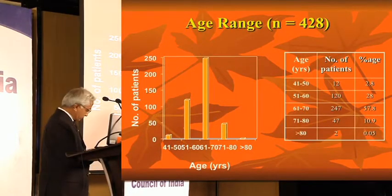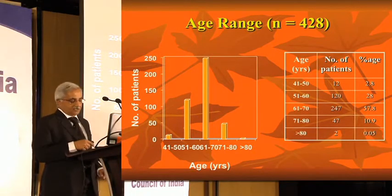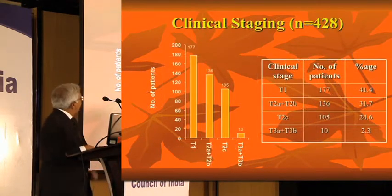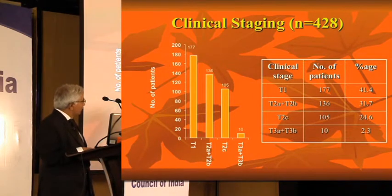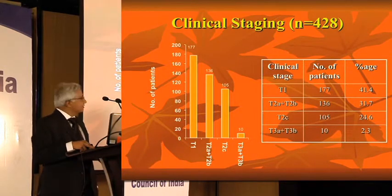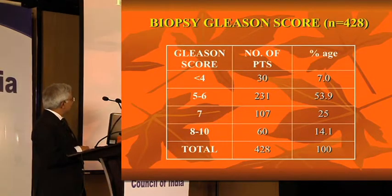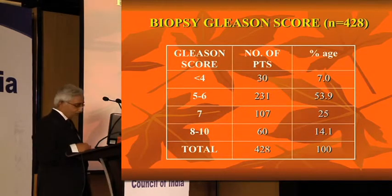This was the age range. There were enough patients above the age of 70, and two patients above the age of 80 as well — biologically they looked less than 80, which is why we operated. Clinical staging in the early part of the study included patients beyond organ confinement, so T3 disease was included. Gleason score — at that time we used less than 4; now we club them as 6, 7, 8, and 10. A good number of patients had a Gleason score of 8 and 10 as well.